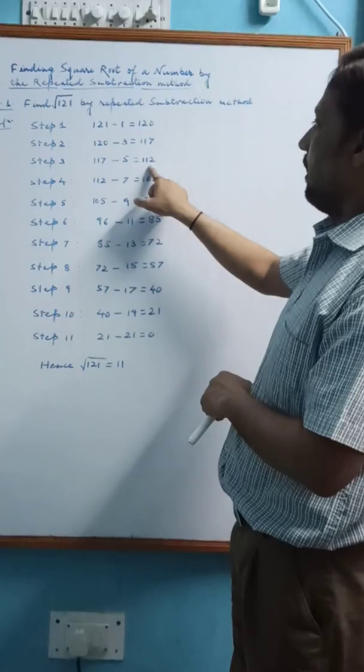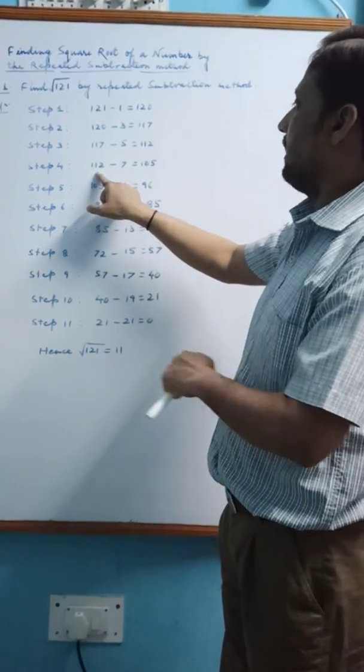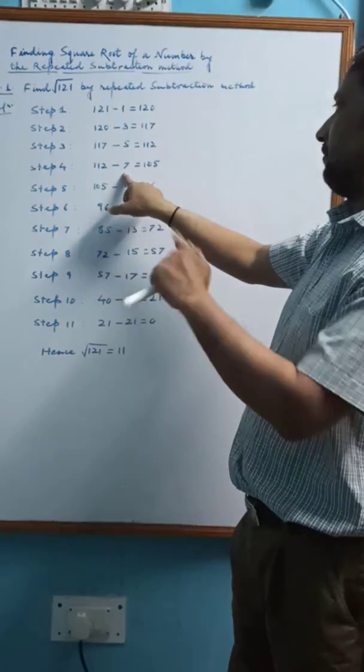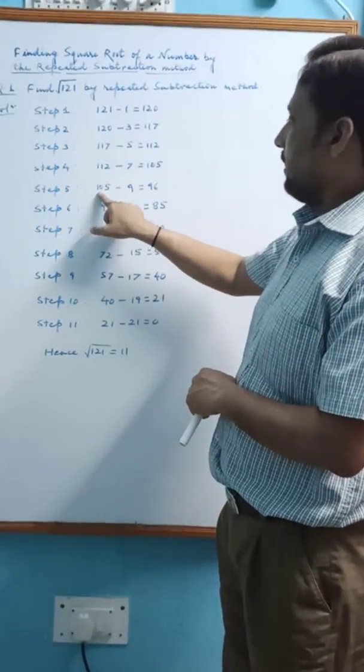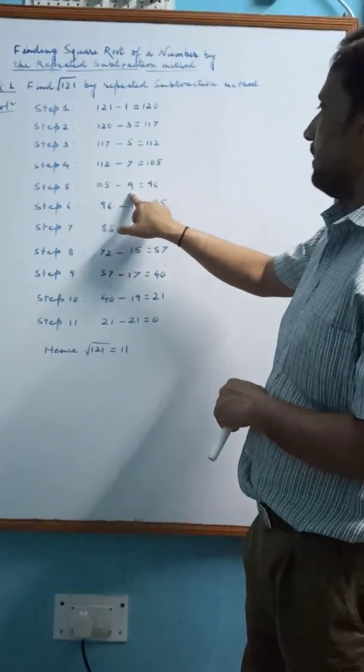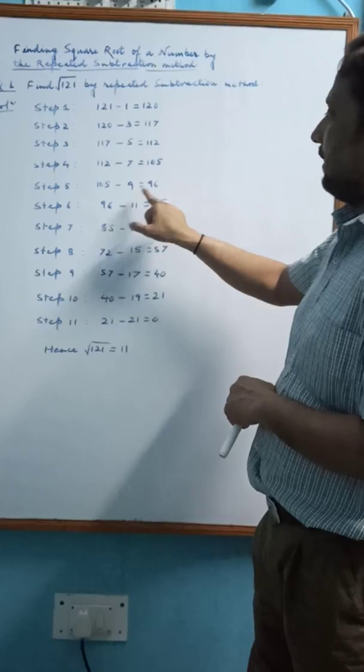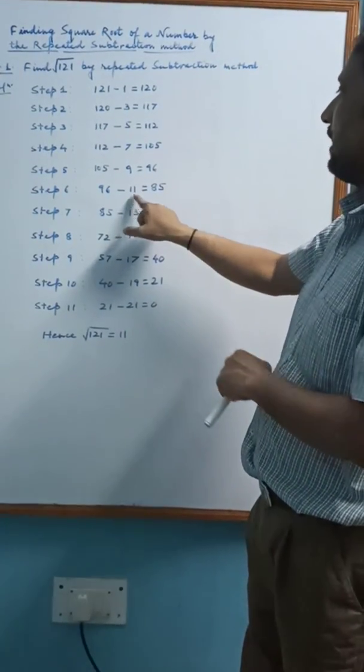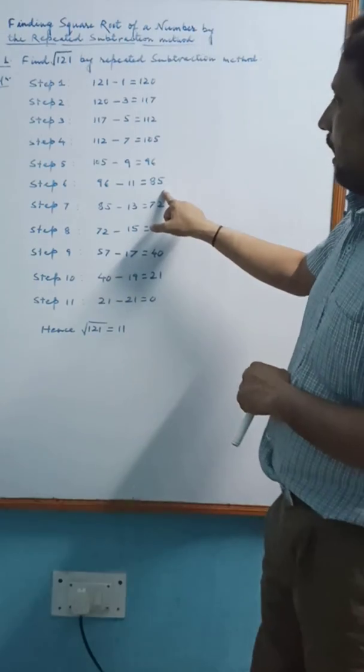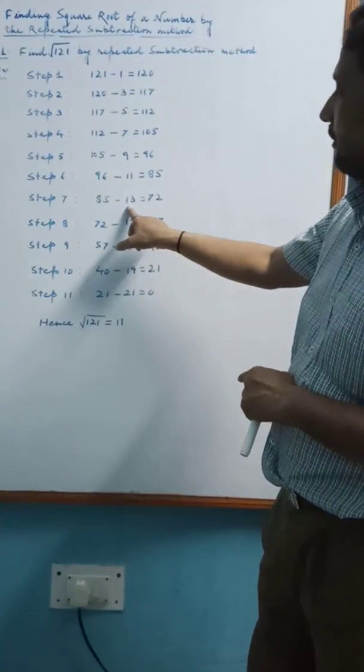In next step 4, 112 is subtracted by 7 and we find 105. And 105 is subtracted by 9, we find 96. 96 is subtracted by the next odd number 11, we find 85. 85 is subtracted by the next odd number 13, we find 72.